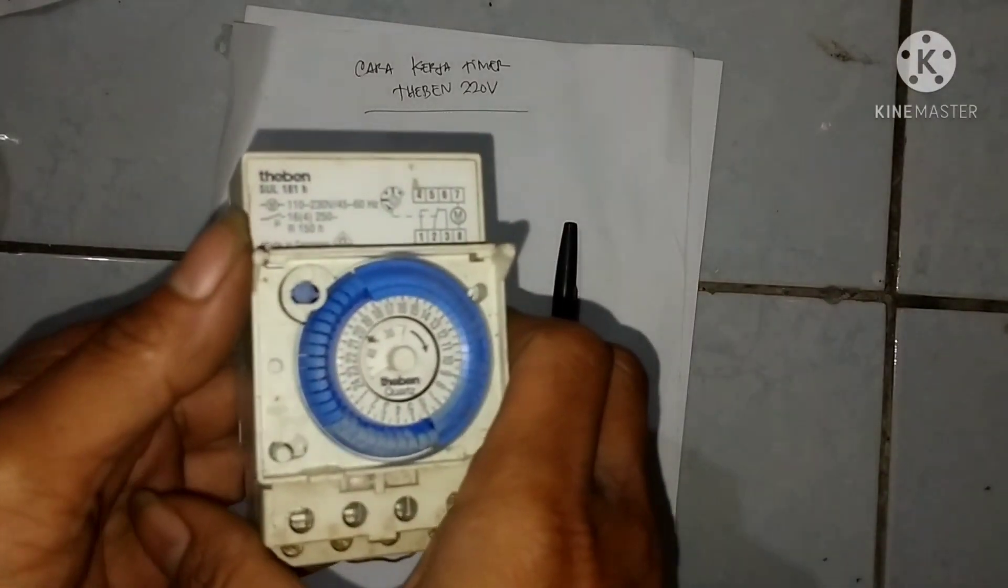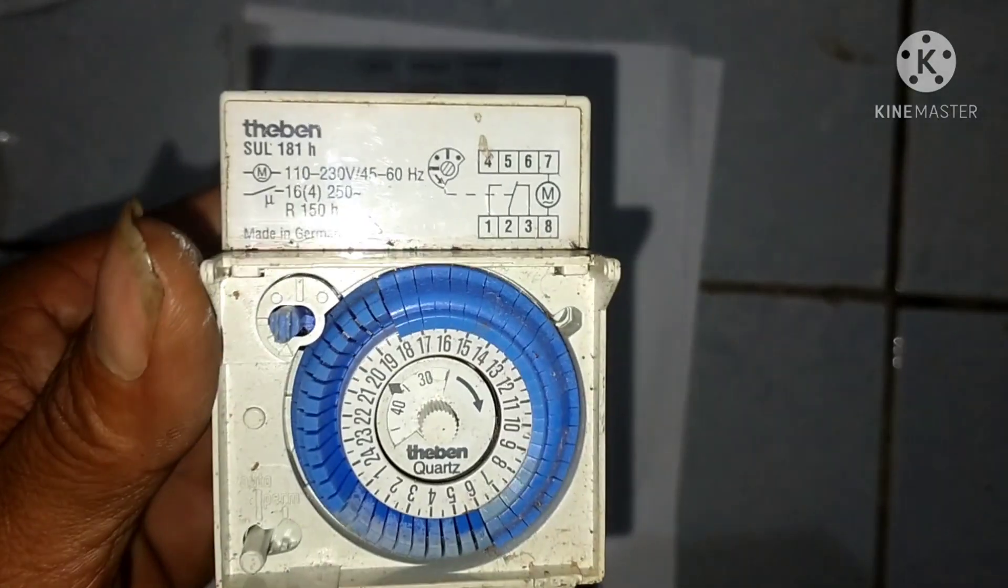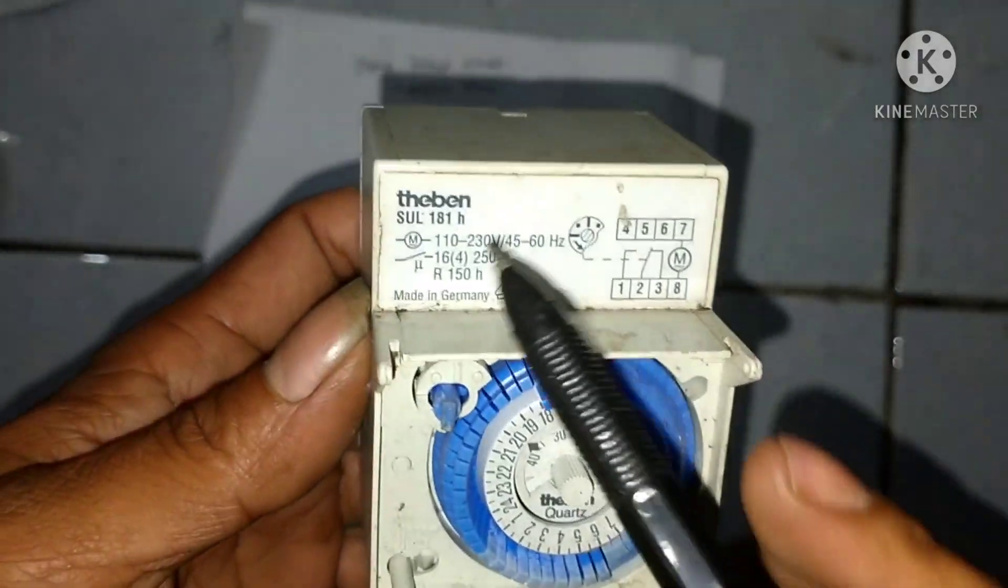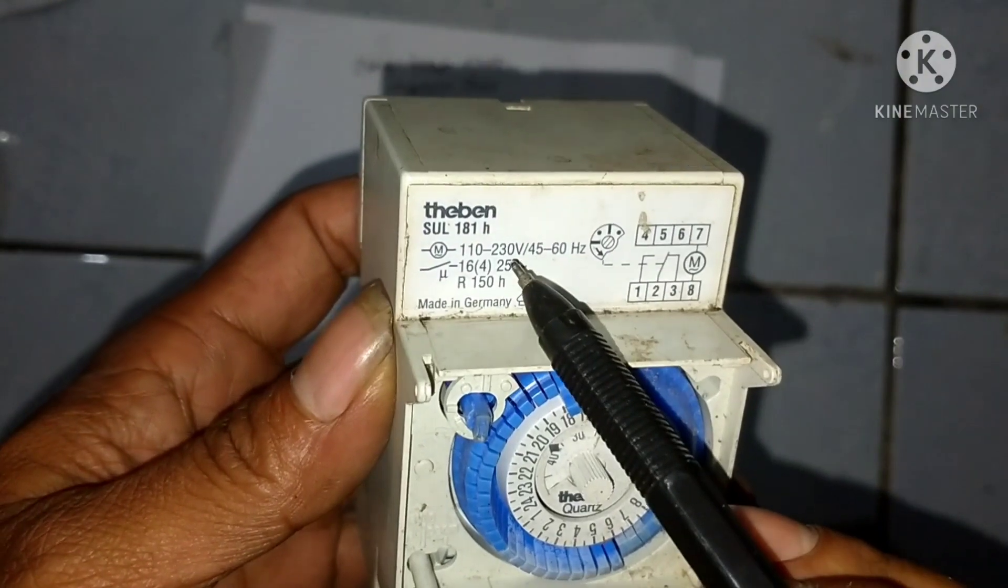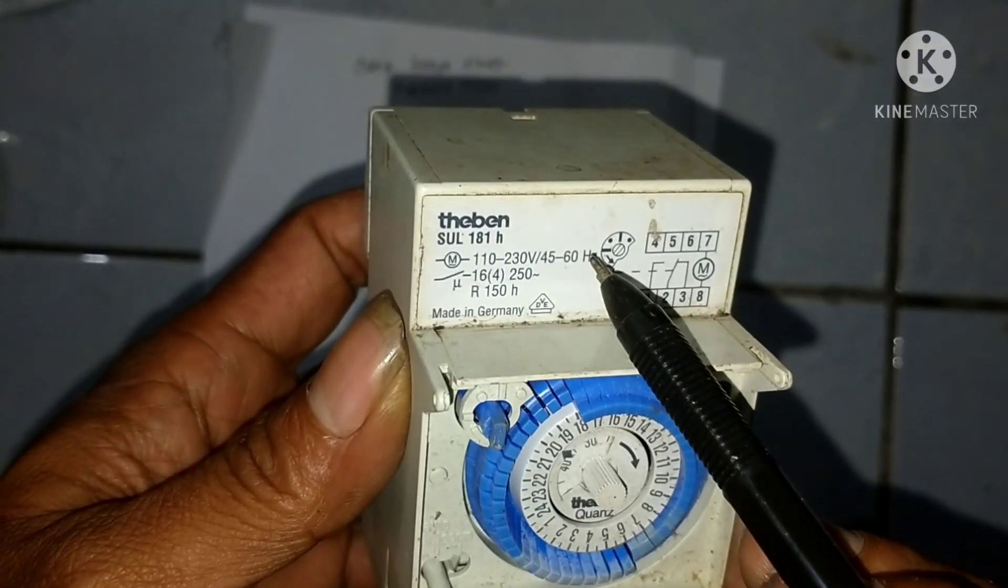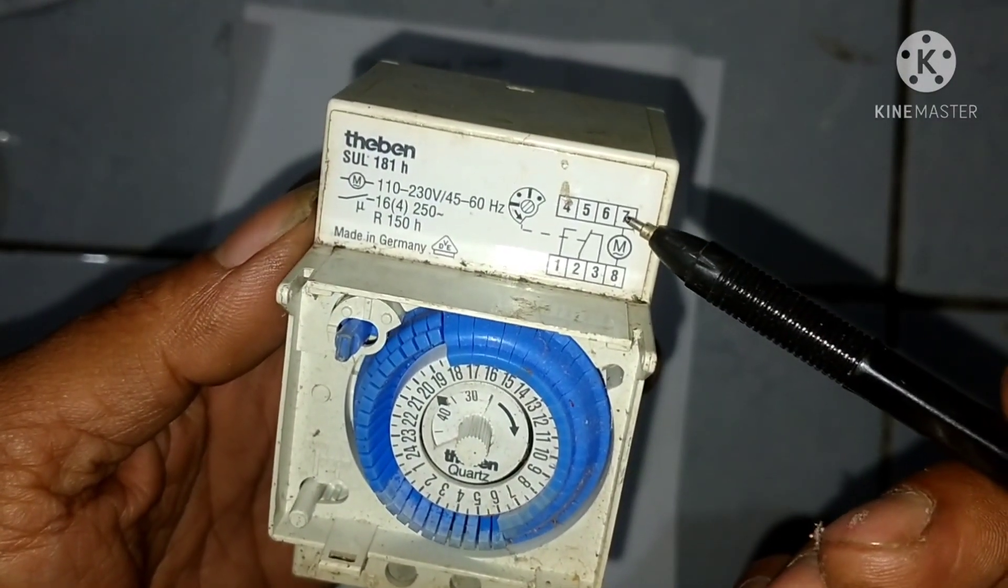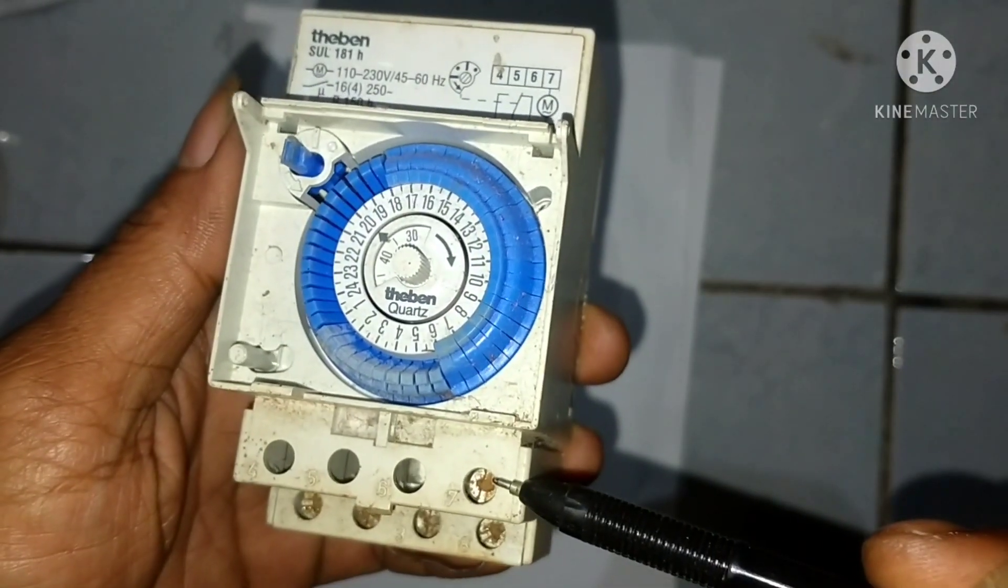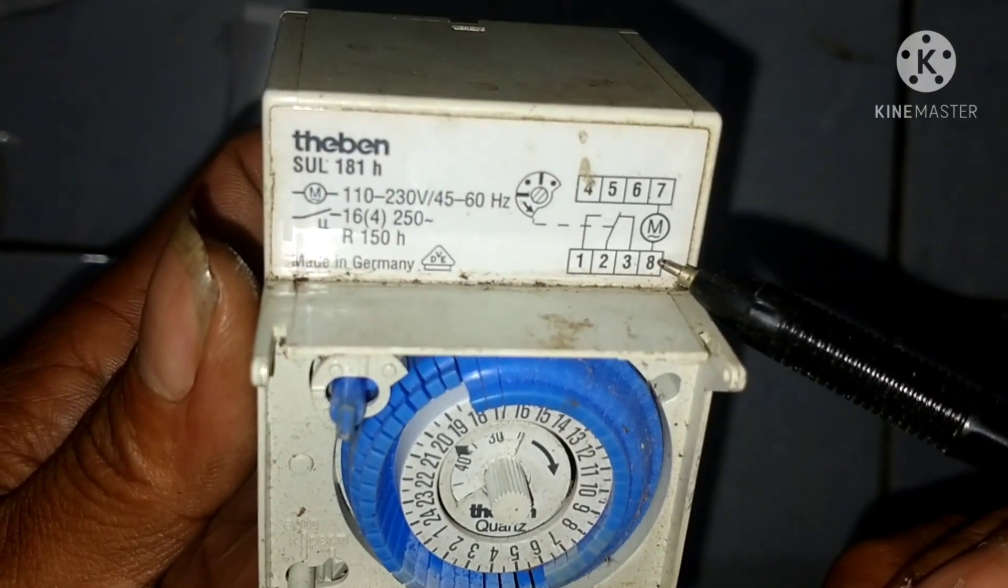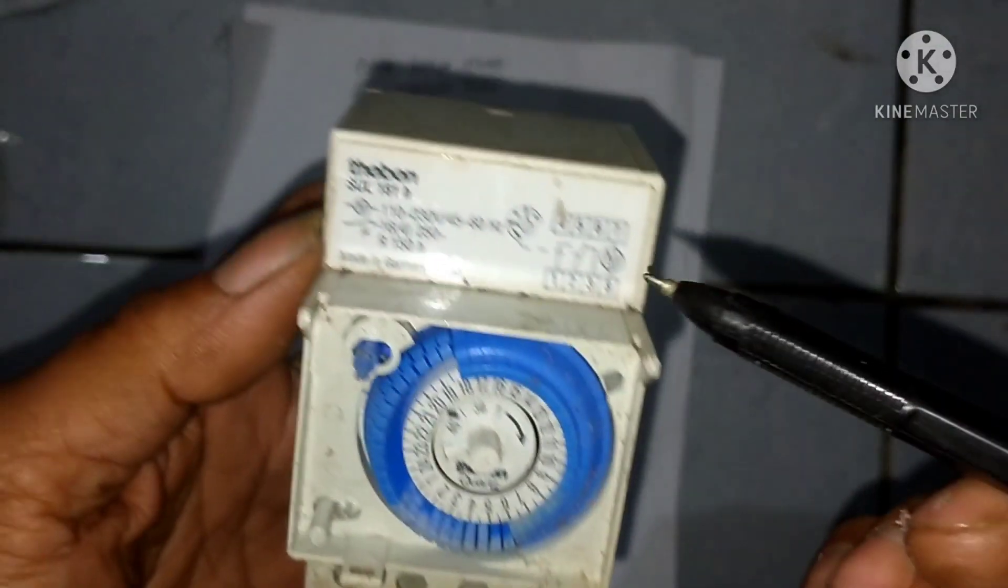Oke langsung aja kita mulai. Di sini gua tunjukin timer yang kuatnya 220V ya. Teman, ini bisa langsung di-on-kan di listrik 220 rumah kita ya dengan colokan ini. Tujuh ini, yang di diagram 7-8 yang di bawah, tujuh dan delapan itu buat motor penggerak.